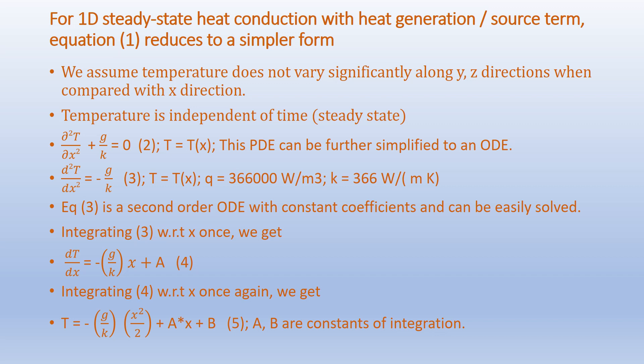In this particular problem we consider G as a constant value, though G can also be a function of x. This is a second-order ODE with constant coefficients and can be easily solved. Integrating once with respect to x we get: dT/dx = -(G/K)·x + A. Integrating again we get: T = -(G/K)·(x²/2) + A·x + B, where A and B are constants of integration.